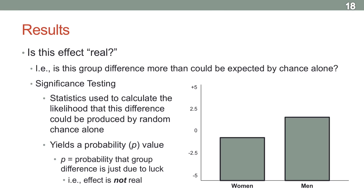Typically in science, we want our p-values to be very low. If a p-value is 0.1 or 10%, that means there's a 10% likelihood that this effect is not real — that it's just due to chance. Whereas if the p-value is 0.01 or 1%, that means there's just a 1% likelihood the effect is due to chance — in other words, a 99% chance that the effect is real.